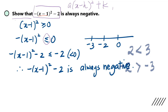If you look at the number line, we can clearly see that negative 2 is less than 0. Therefore, the function given is always negative. This is how you approach questions where you are asked to show that something is negative or always positive.